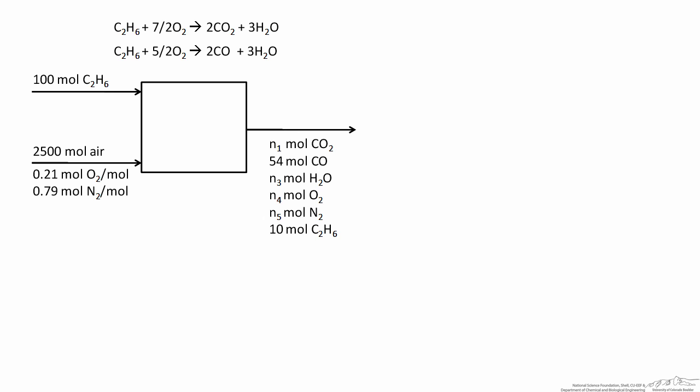The flowchart is updated with the values for moles of air (2,500), ethane leaving (10), and carbon monoxide (54). We still have four unknowns to solve for using a system of atomic species balances. Because there are two reactions, using atomic species balances is generally easier since it avoids tracking extents of reaction. The principle is that atomic species are conserved, so balances take the form in = out, and we can write one for each atom involved: carbon, hydrogen, and oxygen.